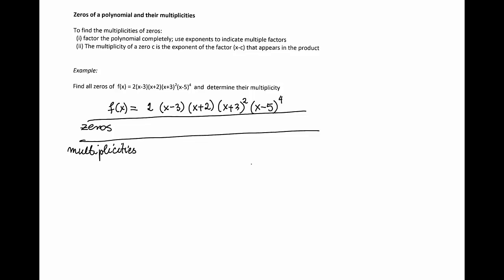First factor that appears in that factorization is 2. 2 does not produce any zero because it's not of the form x minus c.